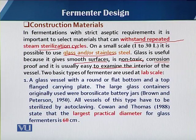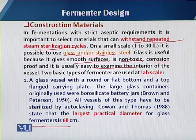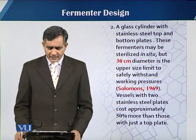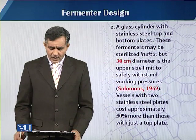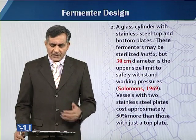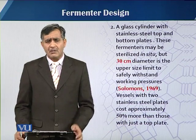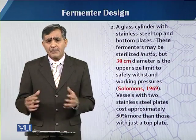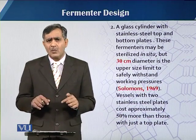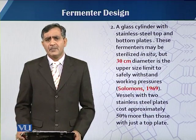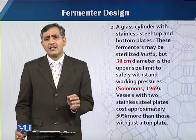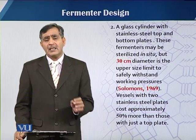For glass vessels with extra sterilization, the vessel width can only go up to 60 centimeters. For a glass cylinder with stainless steel top and bottom plates, fermenters may be sterilized in-situ, but 30 centimeters in diameter is the upper size limit to safely withstand working pressures. This is because in-situ sterilization requires pressure, and sometimes a double-jacketed wall is used to maintain temperature via steam.